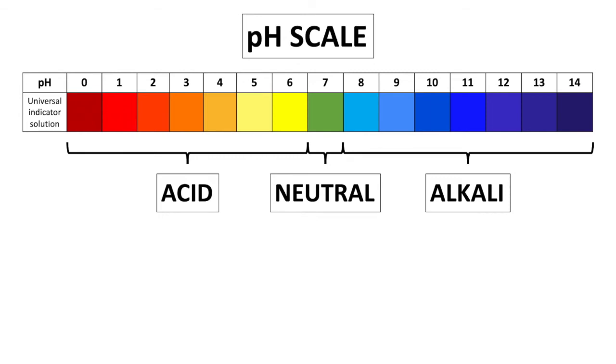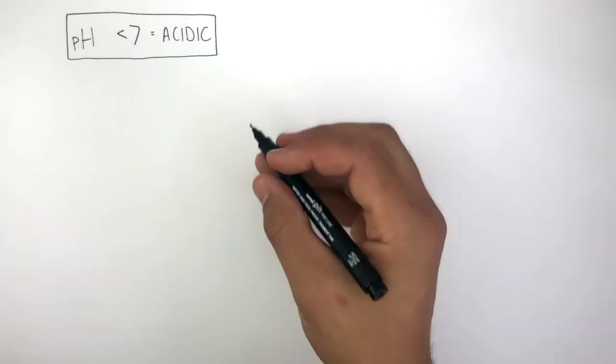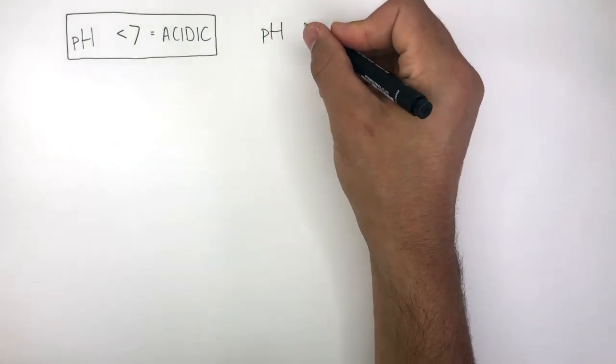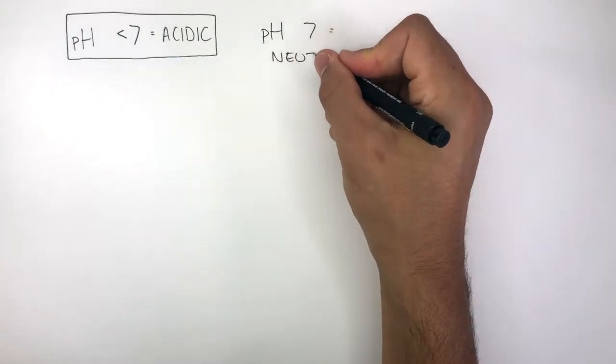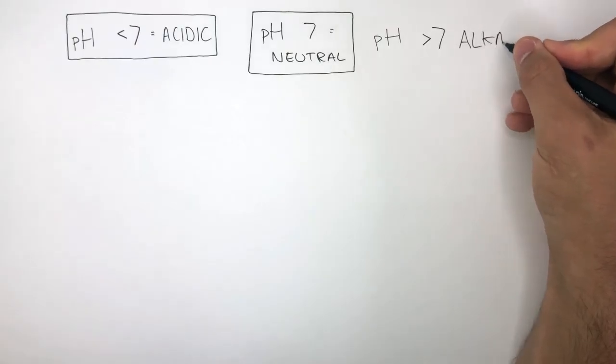So to summarise what we've just learnt about the pH scale: if the pH is below 7 the solution is acidic, if the pH is 7 the solution is neutral, and if the pH is above 7 the solution is alkaline.